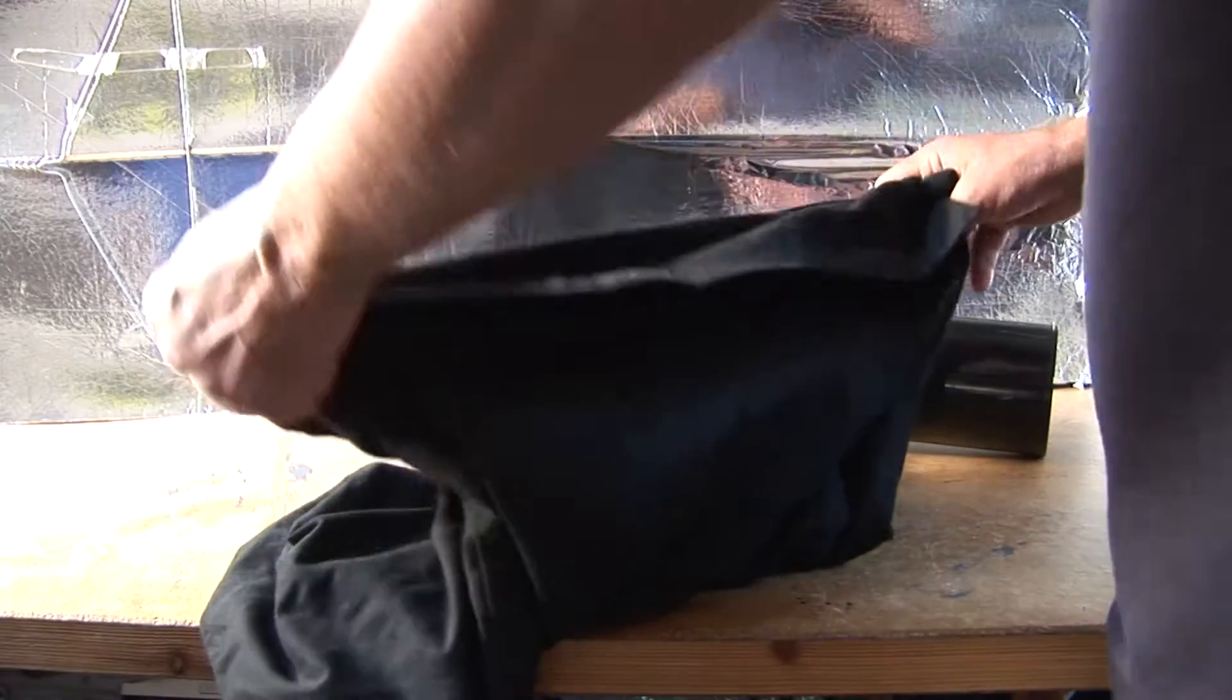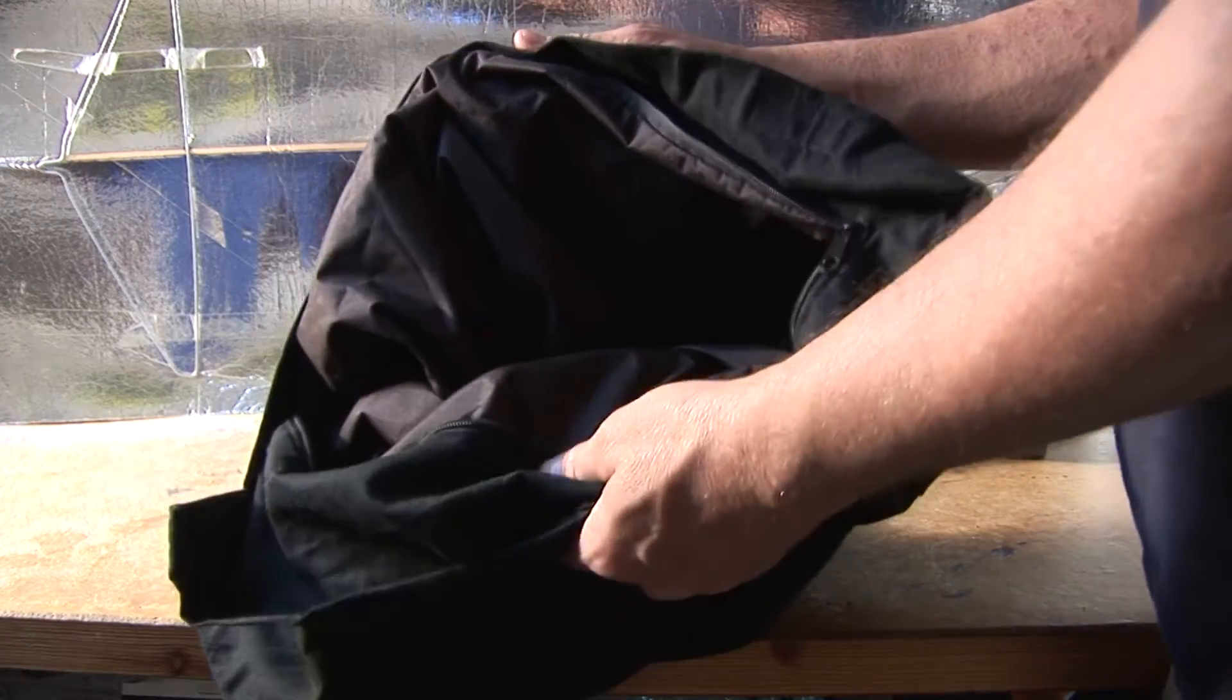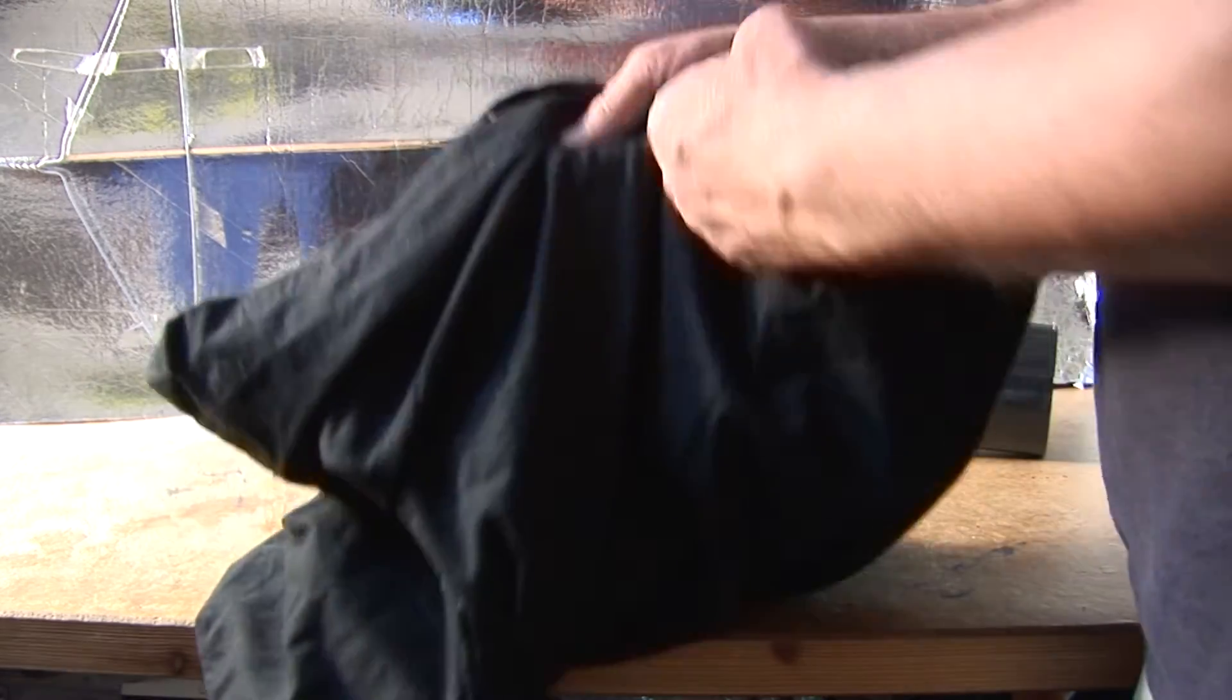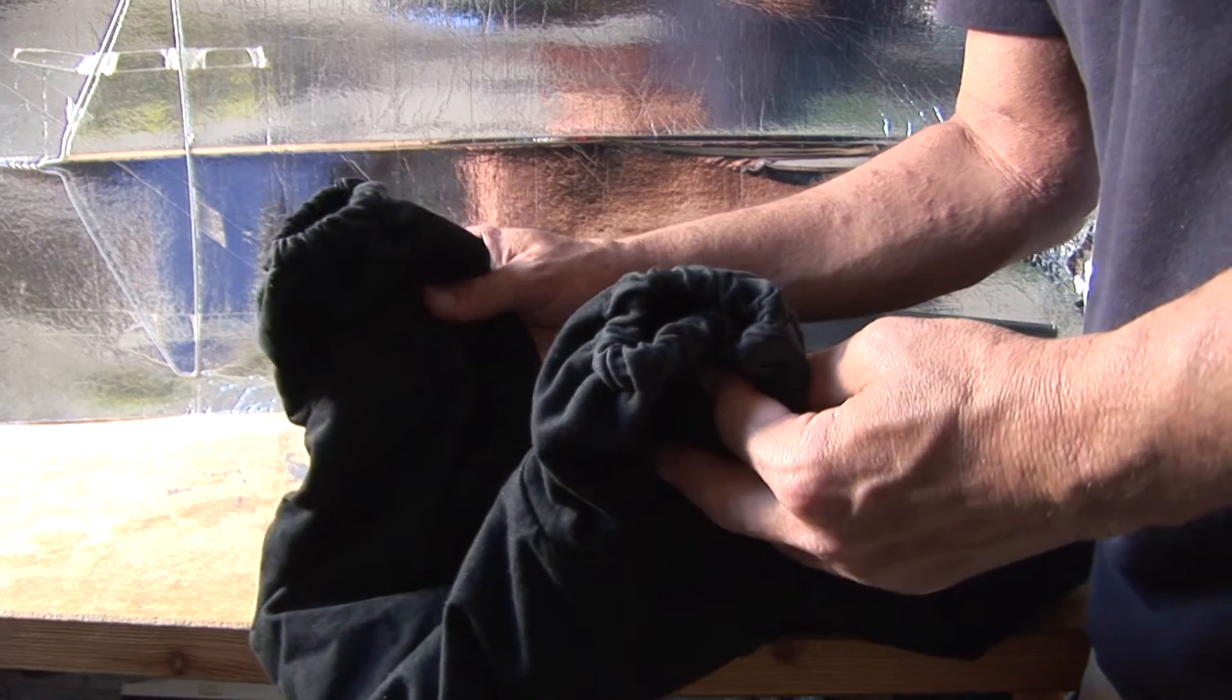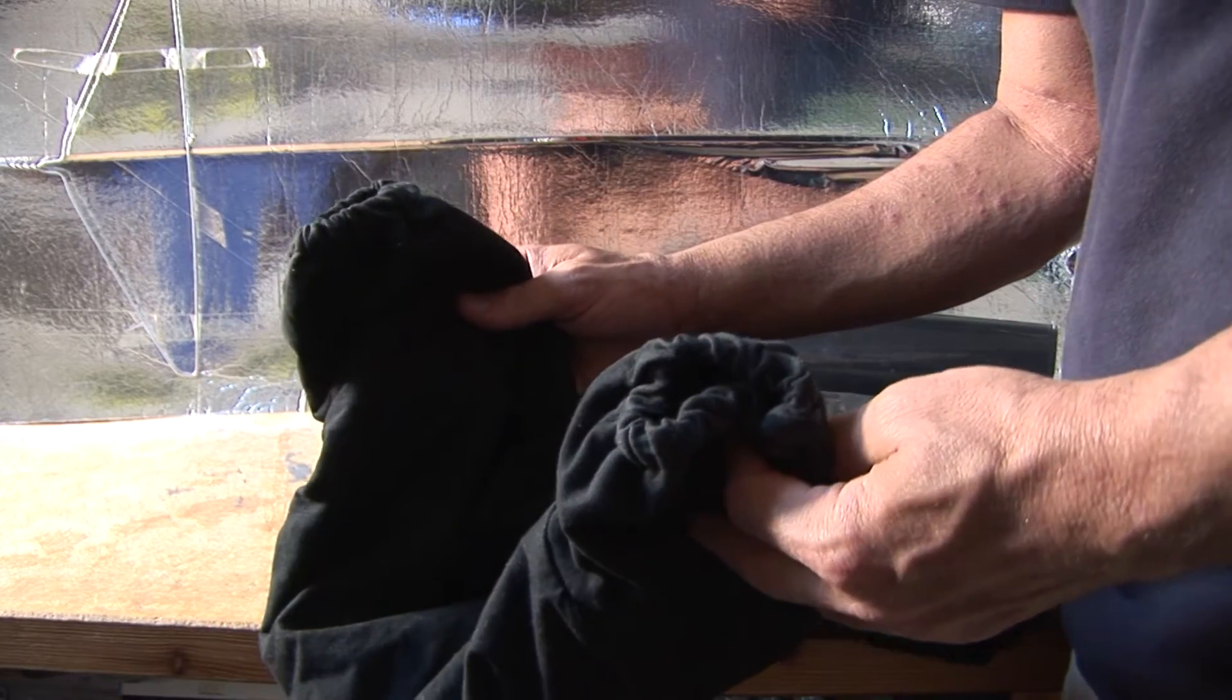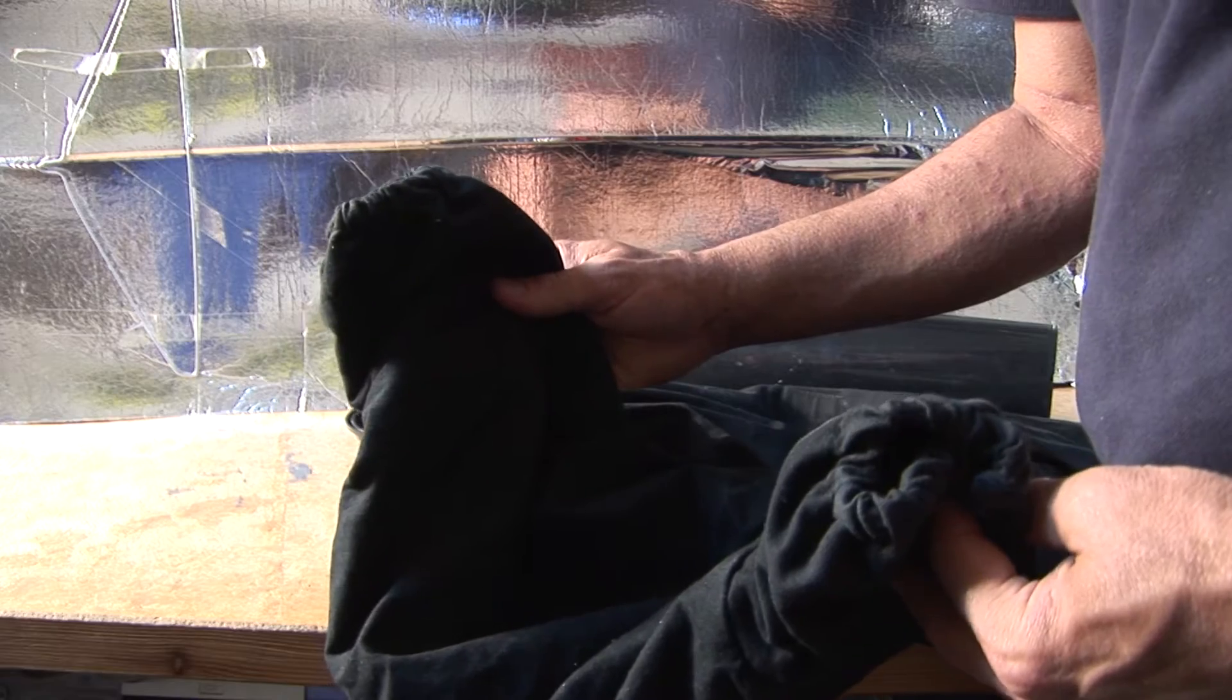So this is a changing bag that I got on eBay. It unzips at this end so you put all your kit into there. And then at the other end, it's got these two cuffs, which are elasticated and you put your hands into them so you can do everything by touch without worrying about exposing your film.